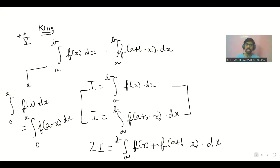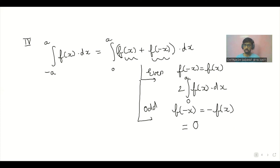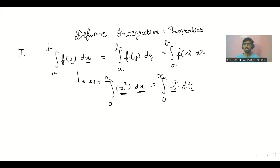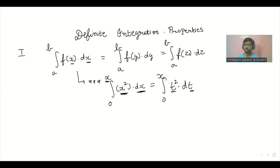Yeh saath basic aur bahut important definite integration ki properties hain — Jack, Queen, King, aur minus A se A wali property aksar kaam aayegi. Limits negative se positive same value mein ho to yeh lagegi. Limit splitting bahut zaada important hai. Aage aane wale lectures mein hum PDF solve karenge aur bahut saare questions ki practice karenge. Please channel ko support karein — like, share, subscribe aur comments karein. Tab tak padhte rahein, thank you everyone.